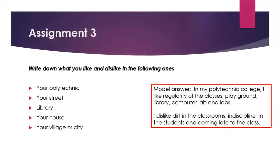Assignment 3: Write down what you like and dislike about the following places — your polytechnic, your street, your library (college library or village library), your house, and your village or city. Write three or four likes and three or four dislikes for each. Any answer is acceptable.